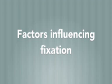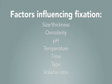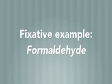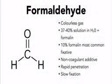Many factors influence fixation, such as tissue size, the osmolarity of the fixative, the pH of the fixative, temperature, time — including delay from surgical removal to fixation and duration of fixation — the type of fixative, and the tissue to fixative volume ratio. Now let's go through an example of a popular fixative: formaldehyde. Formaldehyde is a colourless gas often obtained as a 37 to 40% solution in water, known as formalin. 10% formalin is one of the most commonly used fixatives in the lab. Formalin is a non-coagulant additive that penetrates tissue rapidly but fixes slowly. Other fixatives include glutaraldehyde, alcohol, and osmium tetroxide, each with different properties that make them suitable for different uses.